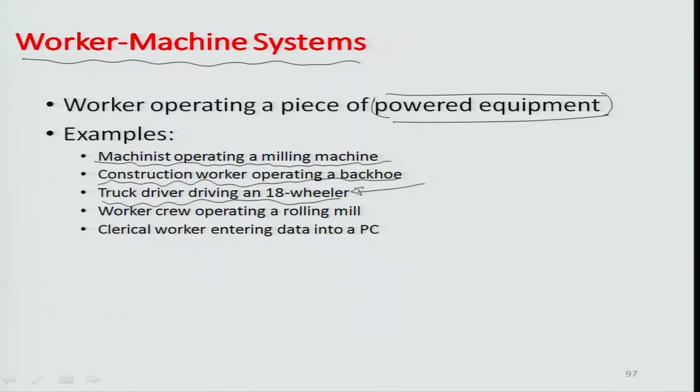Other examples include a worker crew operating a rolling mill, or a clerical worker entering data into a PC. All the data entry steps and memory storage — both RAM and ROM — are done by the PC in a powered mode, but the clerical worker is responsible for inserting the relevant data. All computation and processing is done by the processor. These are examples from daily life of worker-machine systems.